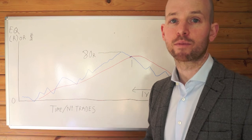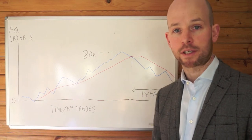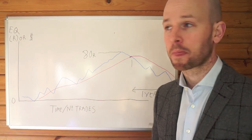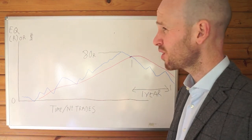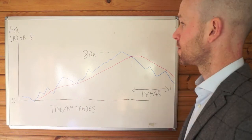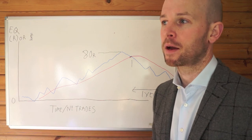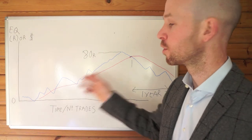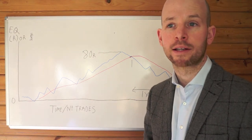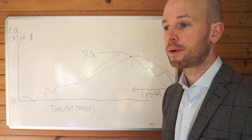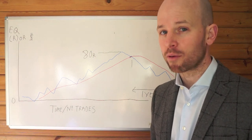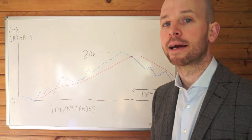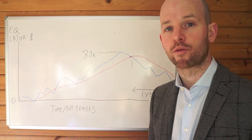Not only does this work for rule-based system traders like myself, it also works for discretionary traders — traders who don't have an exact rigid system but trade more on feel for the markets. You can plot your equity on that as well, and it'll be an indication that maybe your psychology or your own methods aren't performing well, and maybe you should take some time off and re-evaluate things.